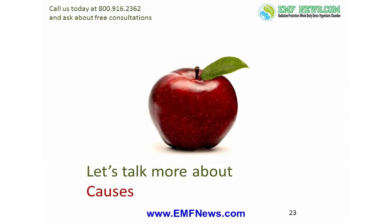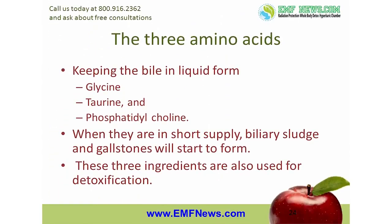We said at the beginning of this presentation that the causes of biliary sludge and gallstones were nutritional deficiencies and toxicity. There are three ingredients that the body uses to dissolve biliary sludge and gallstones and to keep the bile in liquid form: the amino acids glycine and taurine, and phosphatidylcholine. As long as these ingredients are available, bile will stay liquid, but the moment they are in short supply, biliary sludge and gallstones will start to form. The problem is that in addition to keeping the bile healthy, these three ingredients are also used for detoxification.